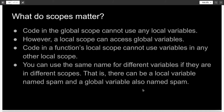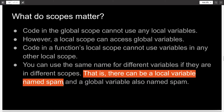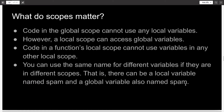So why do scopes matter? Code in the global scope can't use any local variables, because anything with a local scope is only restricted to that function. However, any function can access a variable which has global scope. Code in functions cannot use variables assigned in any other function's local scope. Also, a consequence of scope is that you can use the same variable name across different scopes — for example, you might have three functions all of which create a variable called temp.